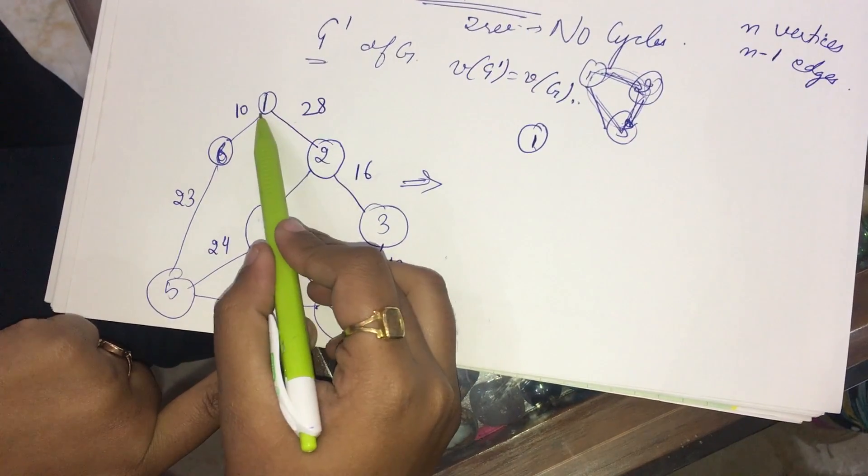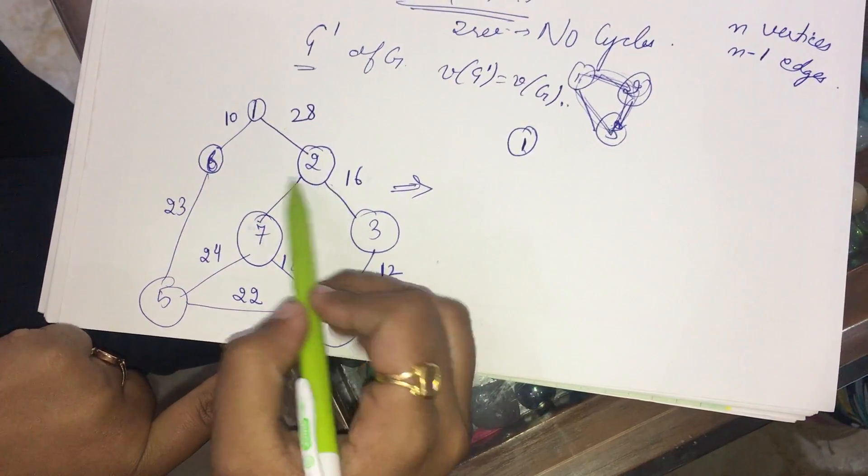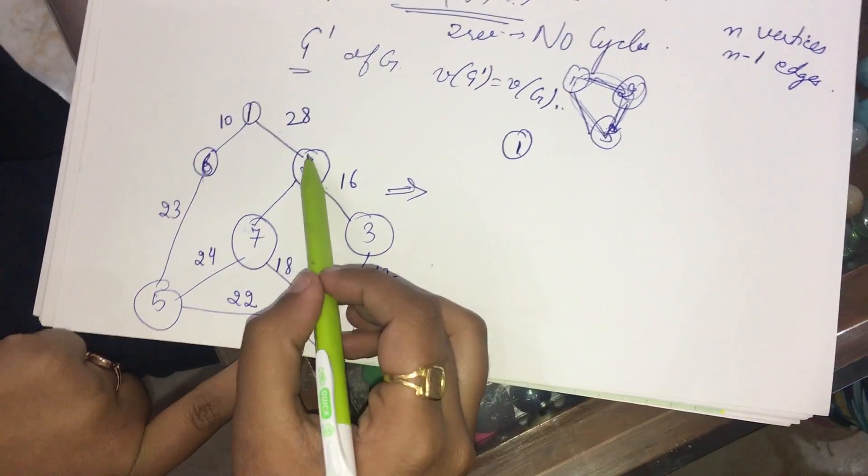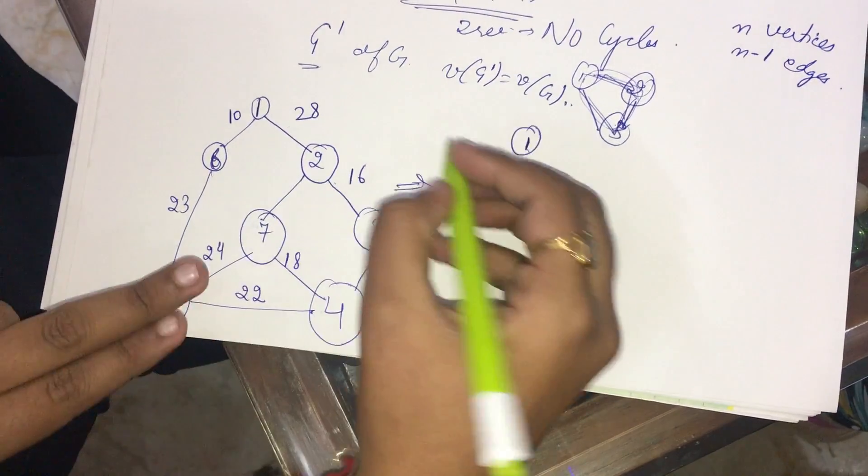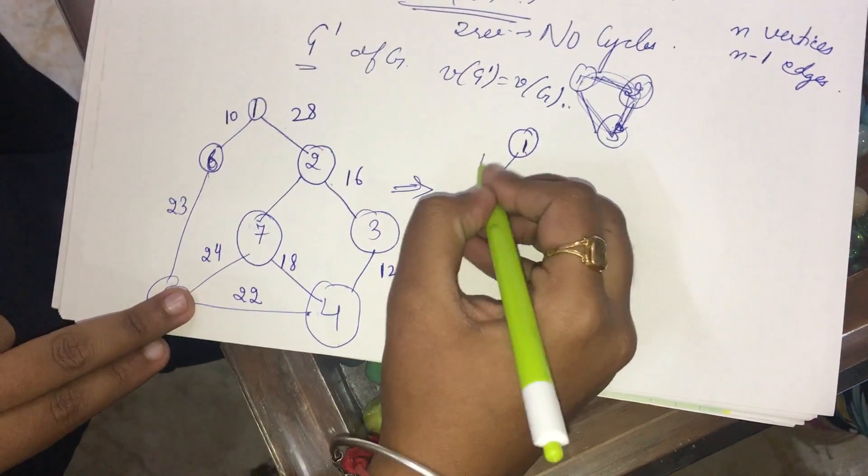I take the minimum of the two paths that are there. 1 goes to 6 or 2. When it goes to 6, the cost is 10. When it goes to 2, the cost is 28. My motive is to minimize the cost, so I choose this path, that is 10.